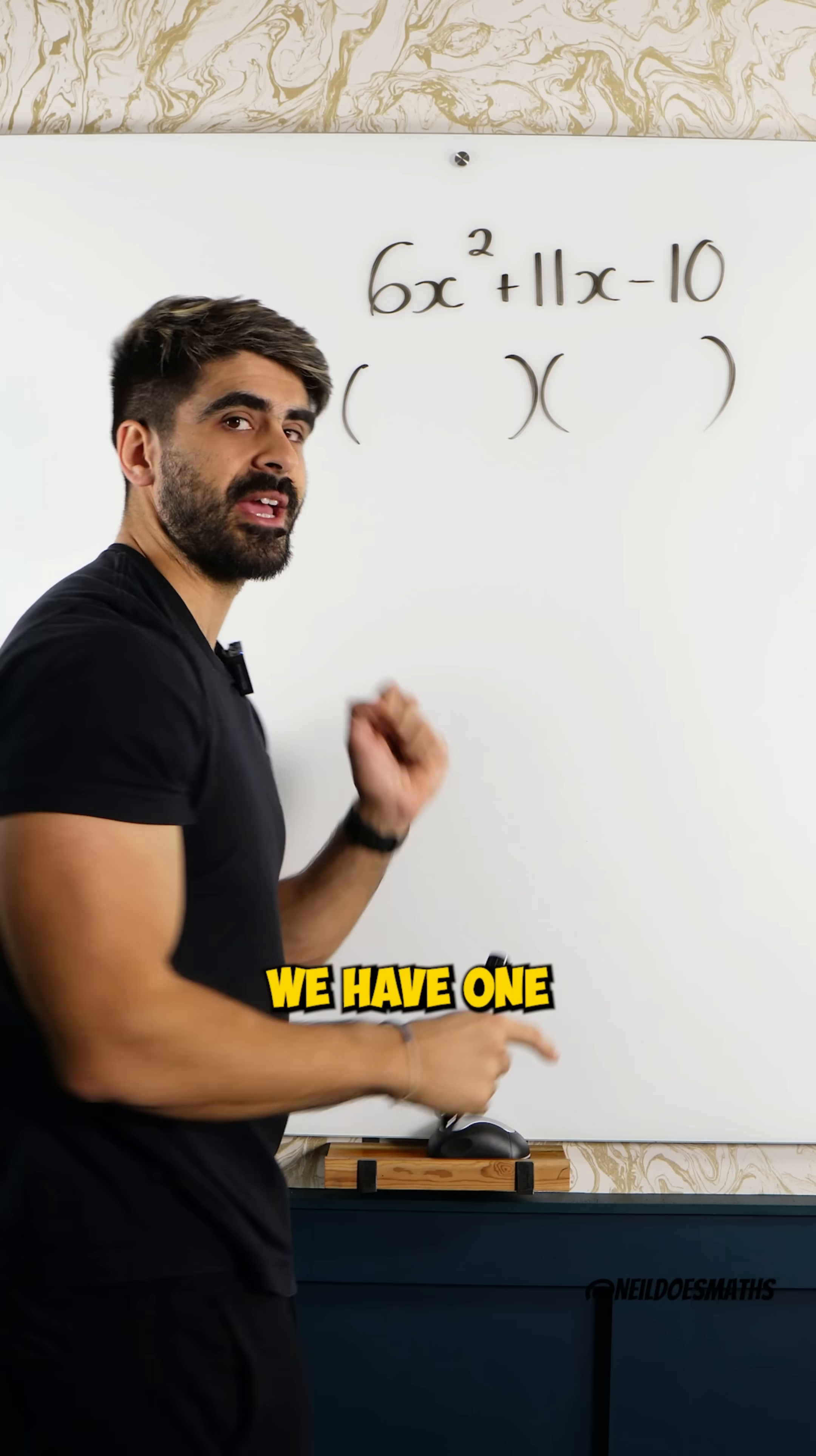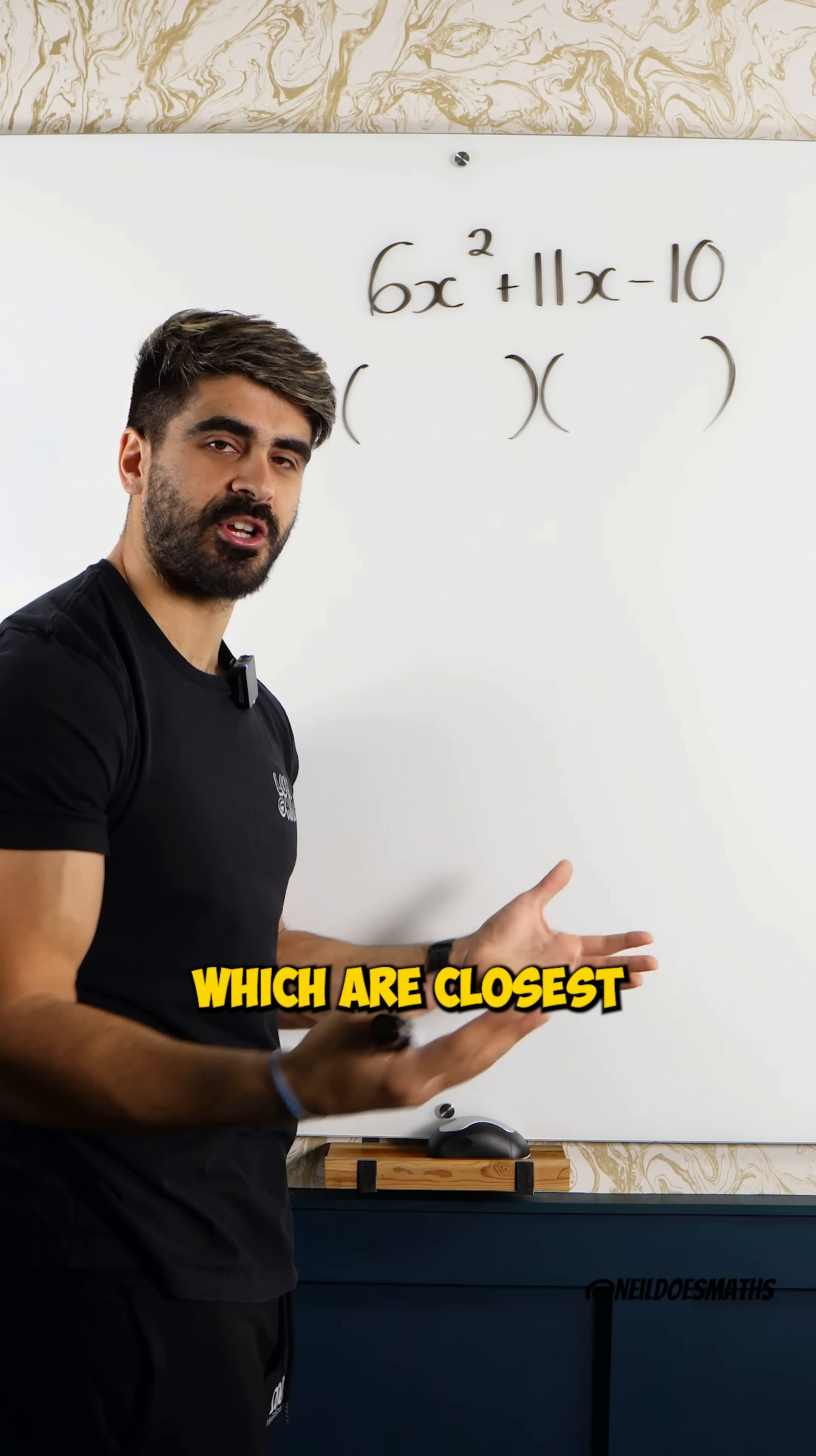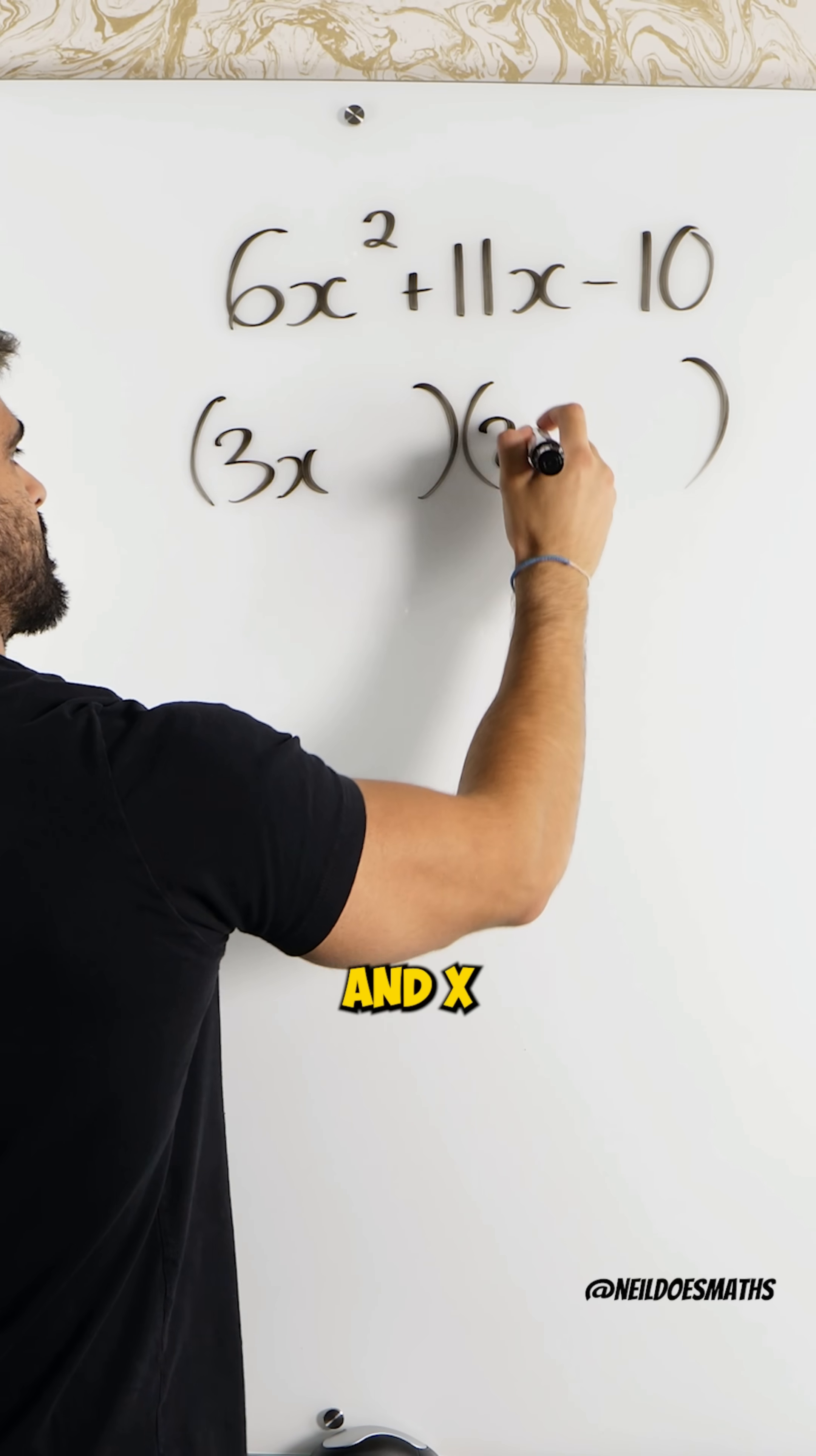Well, we have to think about 6. We have 1 and 6, 2 and 3. I always tell my students to pick the numbers which are closest together first. So, 3 and 2. What multiplies to give you x squared? X and x.